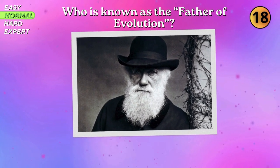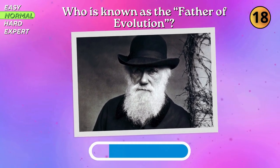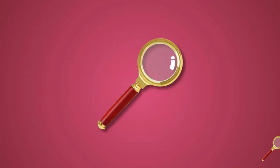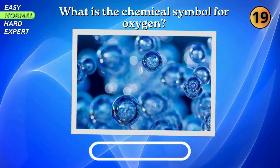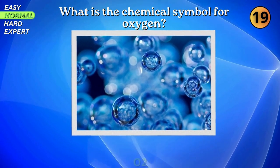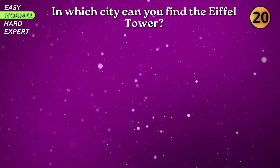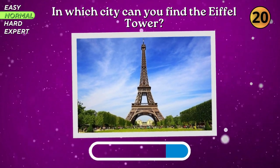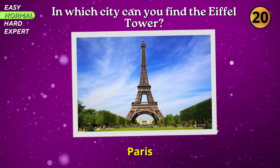Who is known as the father of evolution? Charles Darwin. What is the chemical symbol for oxygen? O2. In which city can you find the Eiffel Tower? Paris.